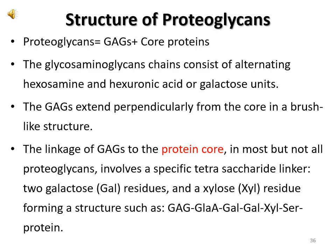The structure of proteoglycans consists of glycosaminoglycans with a core protein. The glycosaminoglycan chain consists of alternating hexosamine and hexuronic acid or glycose units. The GAG chains extend perpendicularly from the core in a brush-like structure. The linkage of GAGs to the protein core in most proteoglycans involves specific saccharides linked to galactose residues and xylose residues, forming the sequence: GAG — glucuronic acid (GLCA) — galactose — galactose — xylose — serine (protein), as shown in the next slide.